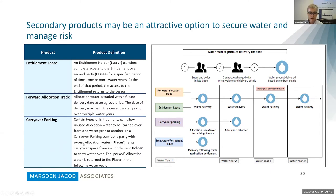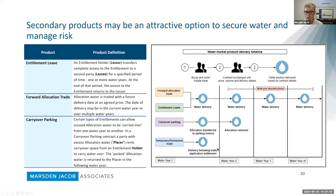Carryover parking is the third product. Certain entitlement types can allow unused water to be carried over year on year. In a carryover parking contract, a party with excess allocation rents space from a holder that has carryover capacity. The parked allocation is held for a period and then returned, typically in the following water year. Carryover parking bridges a water year, whereas leases and forward allocations can be arrangements put in place for multiple water years.